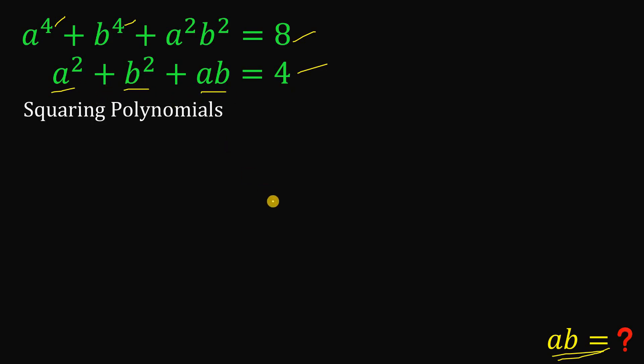And since we have three terms, take note, when we square x plus y plus z, you get something like x squared plus y squared plus z squared plus 2 times the quantity xy plus xz plus yz.